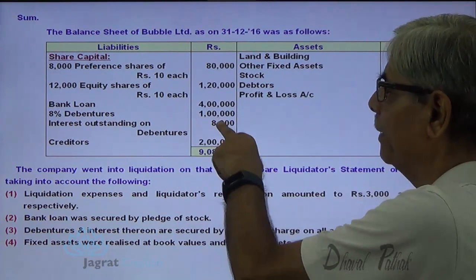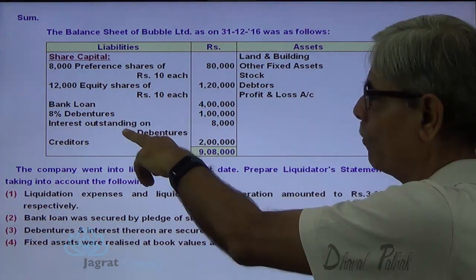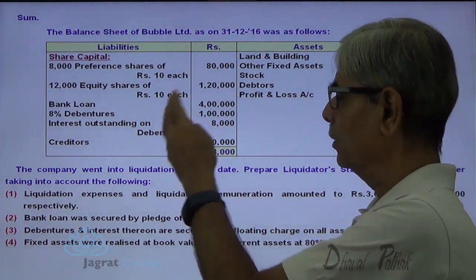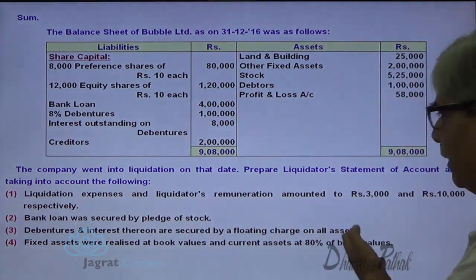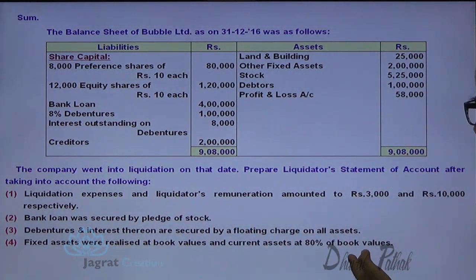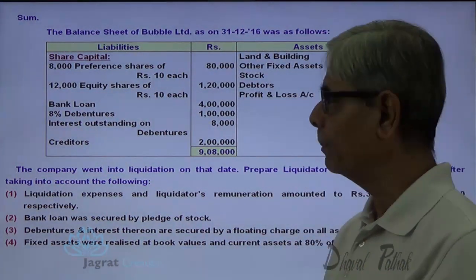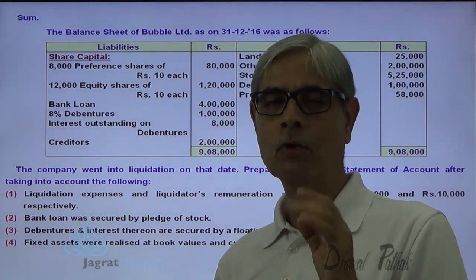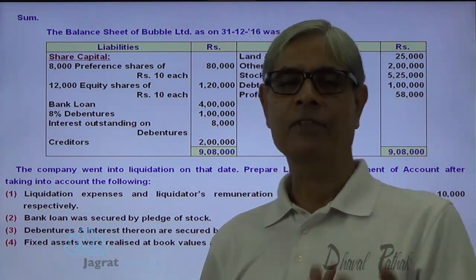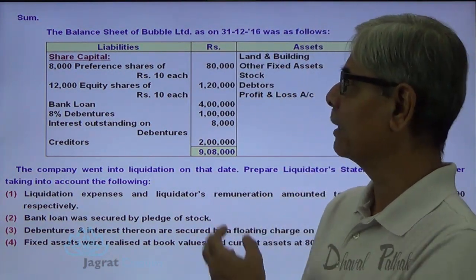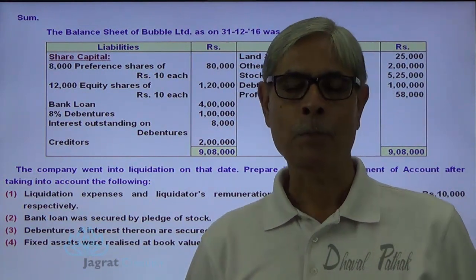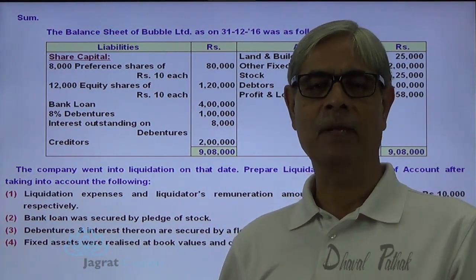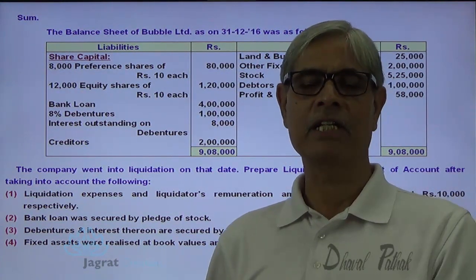After that I am required to make payment to debenture holders — 1 lakh and outstanding interest 8,000. I am not given the date when payment is made, so after making payment to debenture holders and outstanding interest, I am required to pay unsecured creditors. After that, if cash balance is available, payment will be made to preference holders, and even after that, if cash balance is available, then equity shares will be paid. But no calls are going to be demanded in this sum.